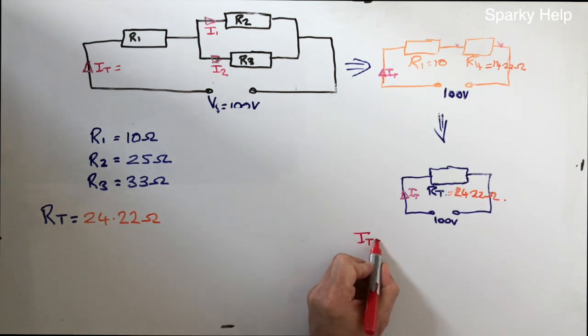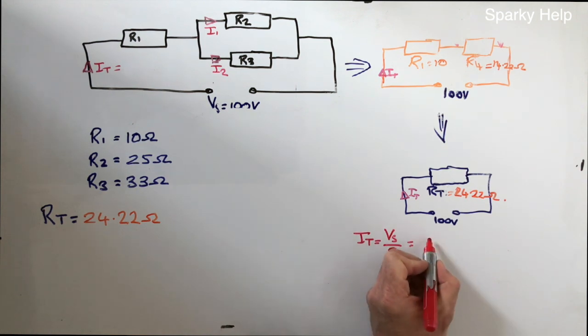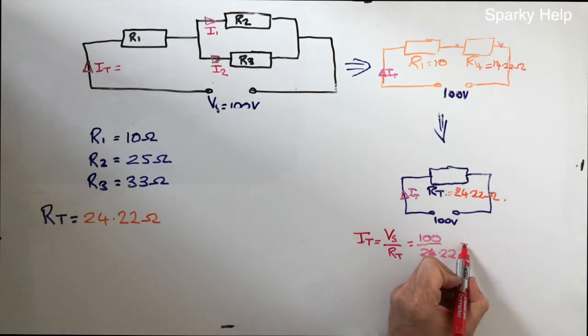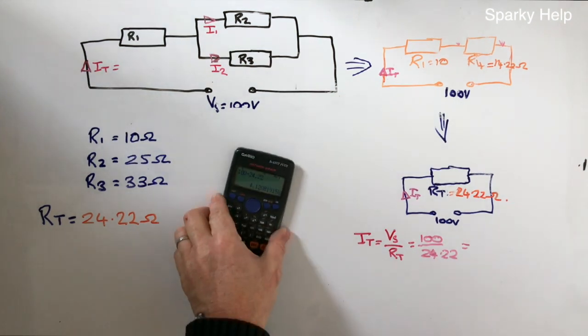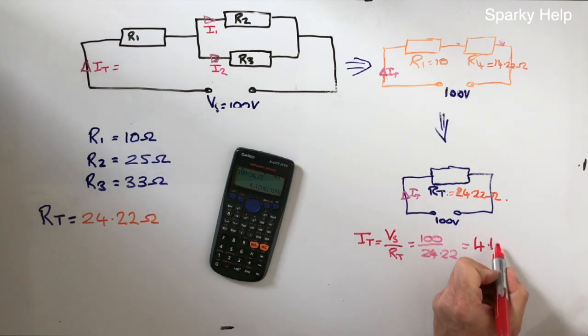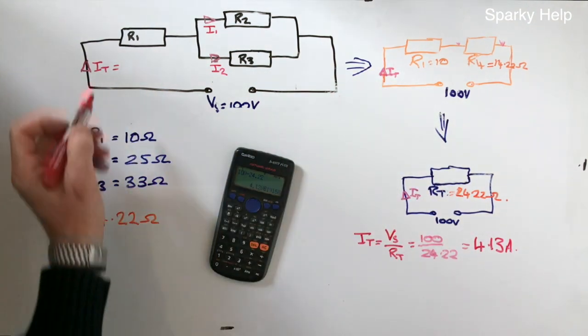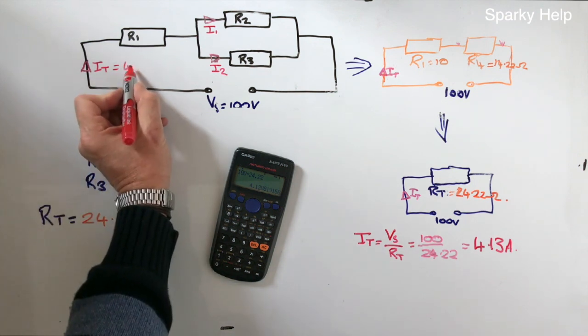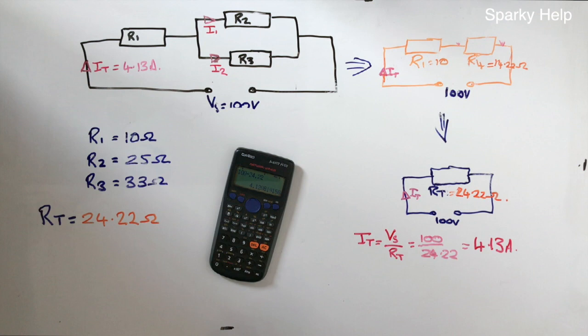Therefore, IT using Ohm's law. VS divided by RT. So total, total and a total. So 24, nearly set the wrong one there. 100 divided by 24.22. And if we do that into the calculator. We will get 4.13 amps. So that then is the current flowing through. In all these locations. So IT, 4.13 amps.